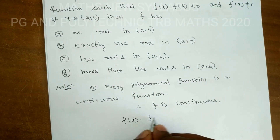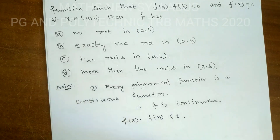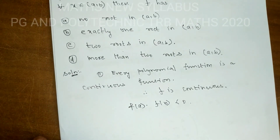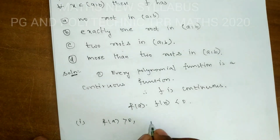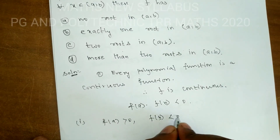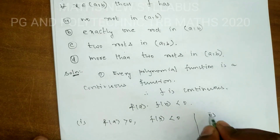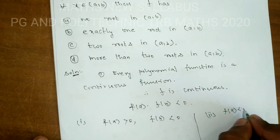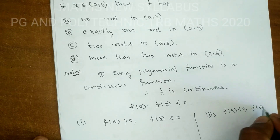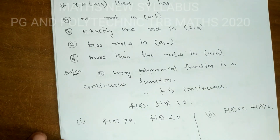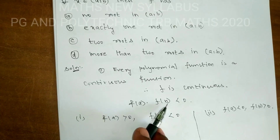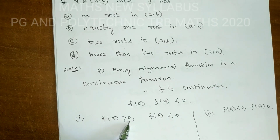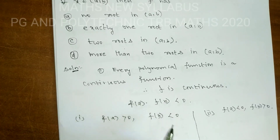We are given that f(a)·f(b) < 0. This means there are two cases: either f(a) > 0 and f(b) < 0, or f(a) < 0 and f(b) > 0. The product of the two values is less than zero, which confirms the two values have opposite signs.